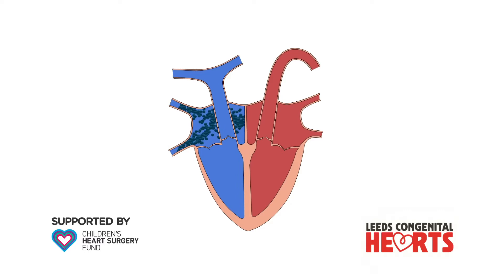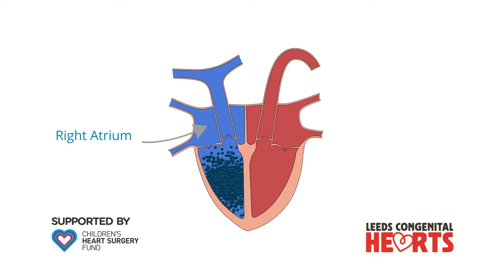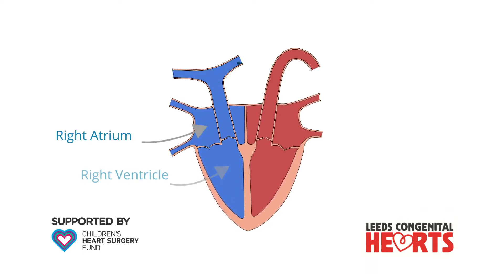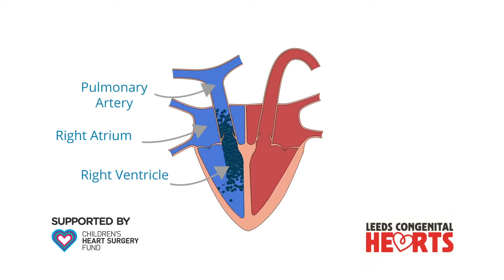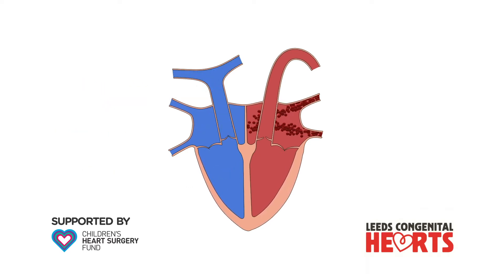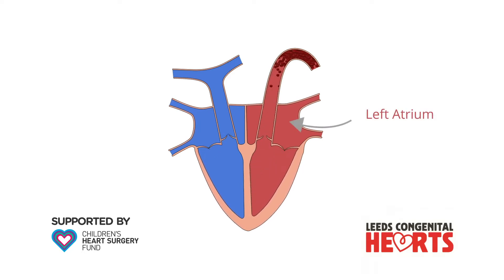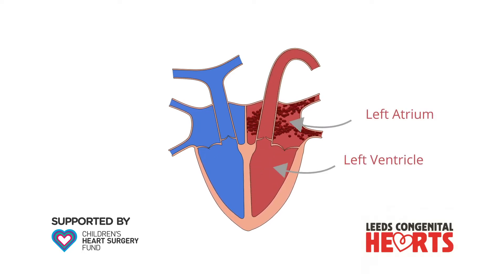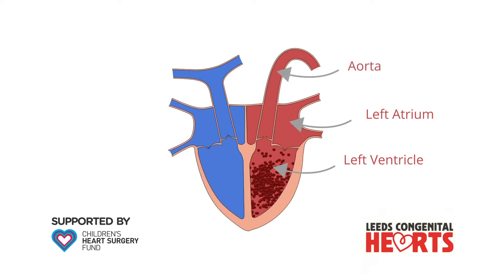Blood from the body returns to the part of the heart called the right atrium. Blood then flows to the right ventricle, from where it is pumped to the lungs via the pulmonary artery. Blood from the lungs returns to the part of the heart called the left atrium, from where it flows to the left ventricle, which pumps blood to the body via the aorta.